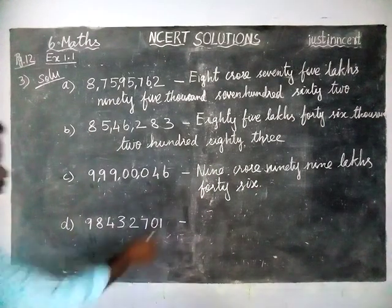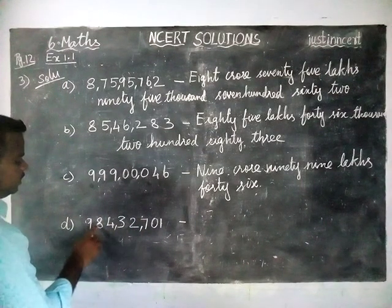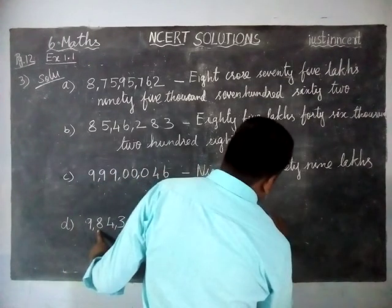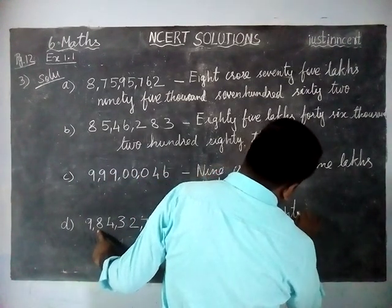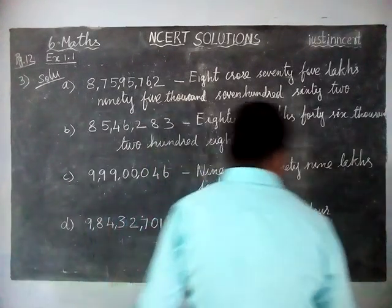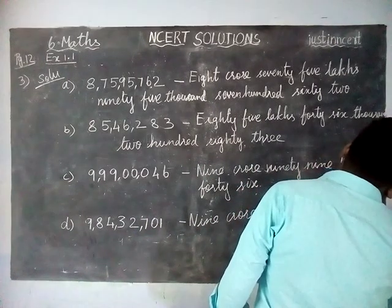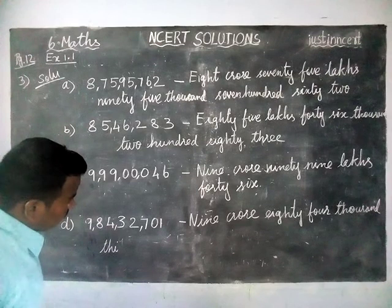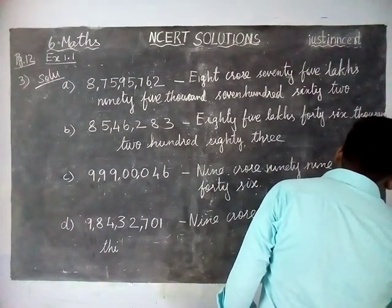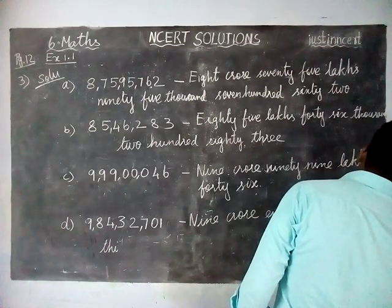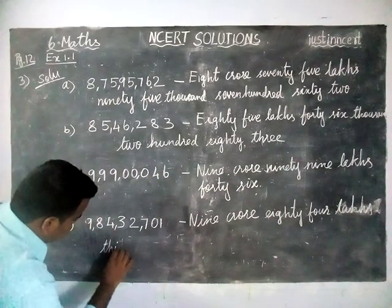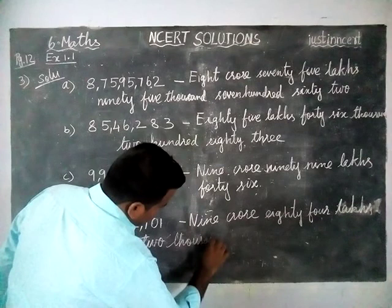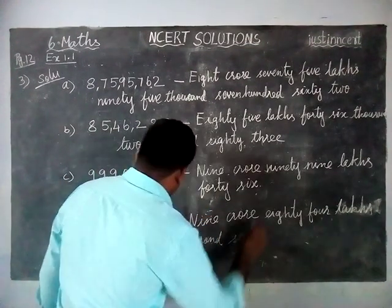Fourth option: ones, tens, hundreds — comma — thousands, ten thousands — comma — lakhs, ten lakhs — comma — crores. Nine crore eighty-four lakhs, thirty-two thousand, seven hundred one.